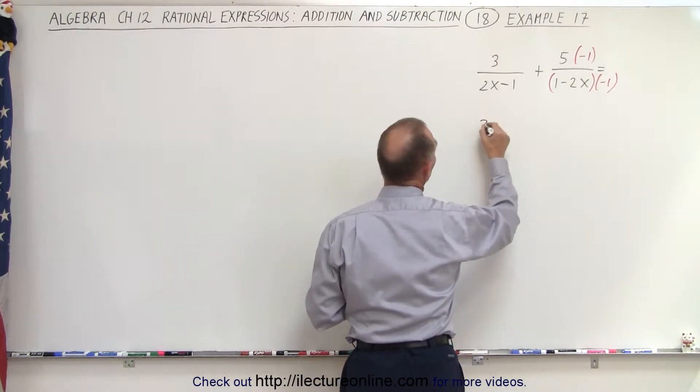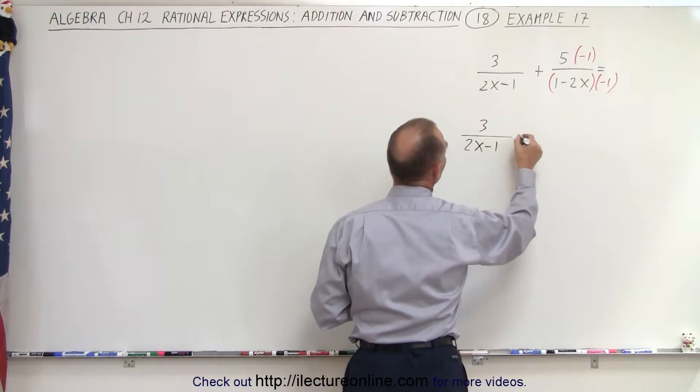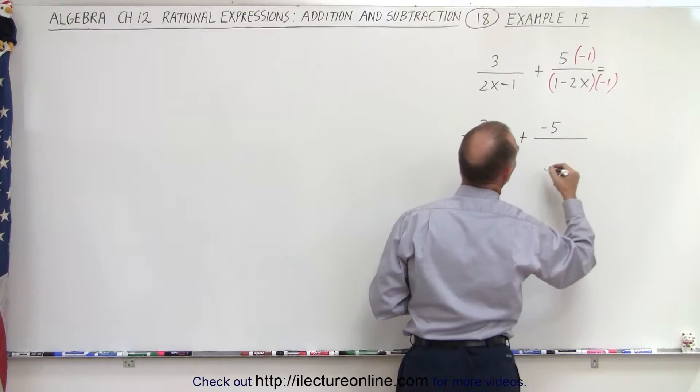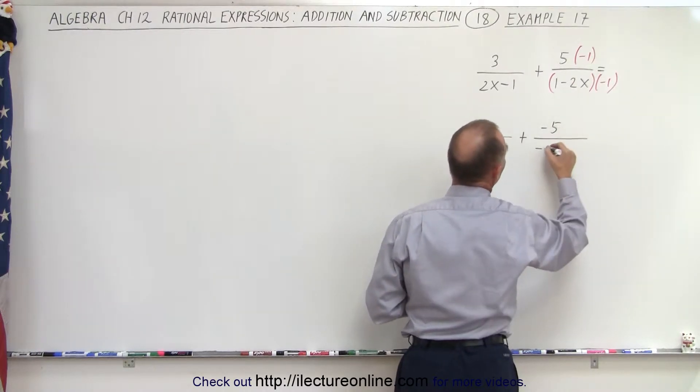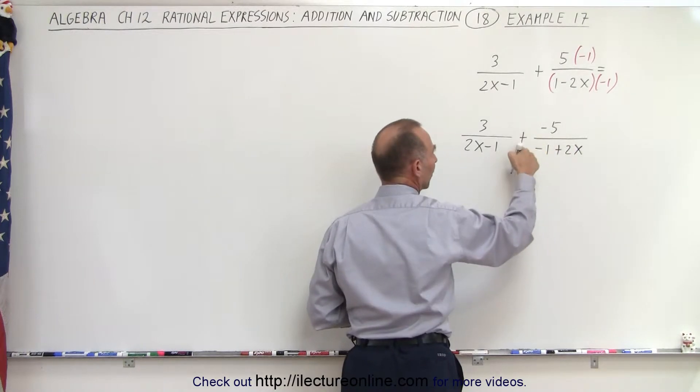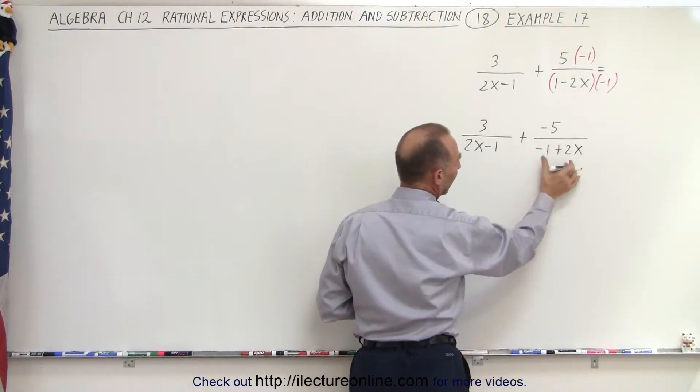So this is going to be 3 over 2x minus 1 plus a negative 5 divided by, we multiply that, we get negative 1 plus 2x. And then notice I can move the negative 1 over here and I can now flip these over.